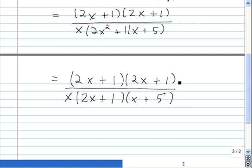2x plus 1 times 2x plus 1 is the top. x times 2x plus 1 times x plus 5 is the bottom. So there's one common factor among the top and the bottom, and it's 2x plus 1. I'll go ahead and cancel that. Because 2x plus 1 divided by 2x plus 1 is simply 1.